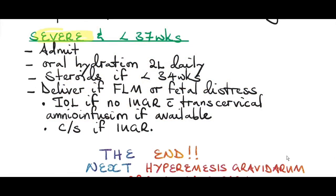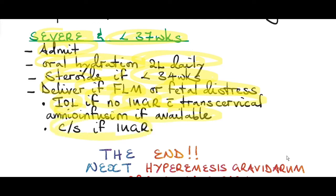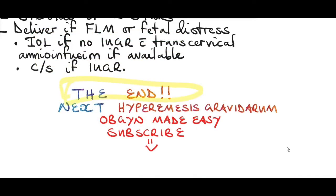For severe oligohydramnios less than 37 weeks, admit the patient and encourage oral hydration of 2 liters daily. Give steroids — betamethasone or dexamethasone — if gestational age is less than 34 weeks to help with fetal lung maturity. Only deliver if fetal lung maturity is confirmed or there is fetal distress. Do induction of labor with transcervical amnioinfusion if possible if there is no IUGR, or perform a cesarean section if there is IUGR. This concludes our discussion on oligohydramnios and amniotic fluid disorders. In the next video, I will discuss hyperemesis gravidarum — please subscribe to the channel.